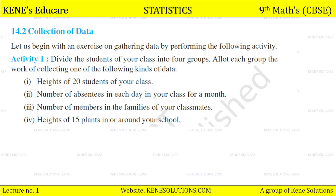Divide the students of your class into four groups. Allot each group one of the following kinds of data to collect: heights of 20 students in your class; number of absentees in each day in your class for a month (you can take this data from your teachers); number of members in the families of your classmates; or heights of 15 plants in or around your school.